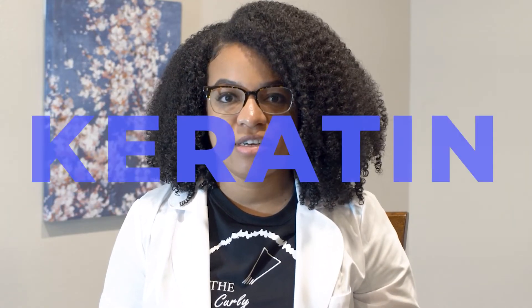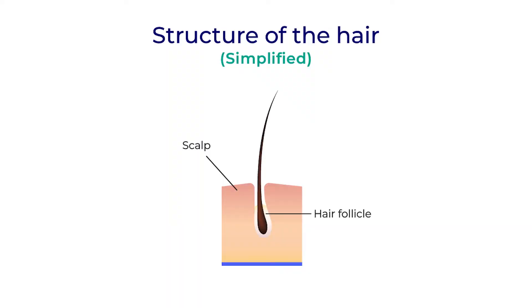Speaking of hair care science, let's talk about your hair. Hair is made out of a tough protein called keratin. The hair follicle anchors each hair into the skin, and there at the base, the hair bulb forms. At the hair bulb, living cells divide and grow and form the hair shaft — that's actually the hair that you can see.